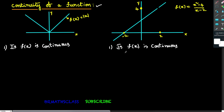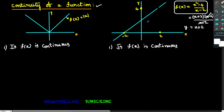Now come to the second graph. Is f(x) continuous? Here f(x) = (x² - 4)/(x - 2). Observe the graph — is there any gap? Yes, there is a gap at x = 2. Why? Because if we substitute x = 2 into this function, it is not defined. The denominator becomes zero, so the function is not defined at x = 2. That is why there is a gap at x = 2.